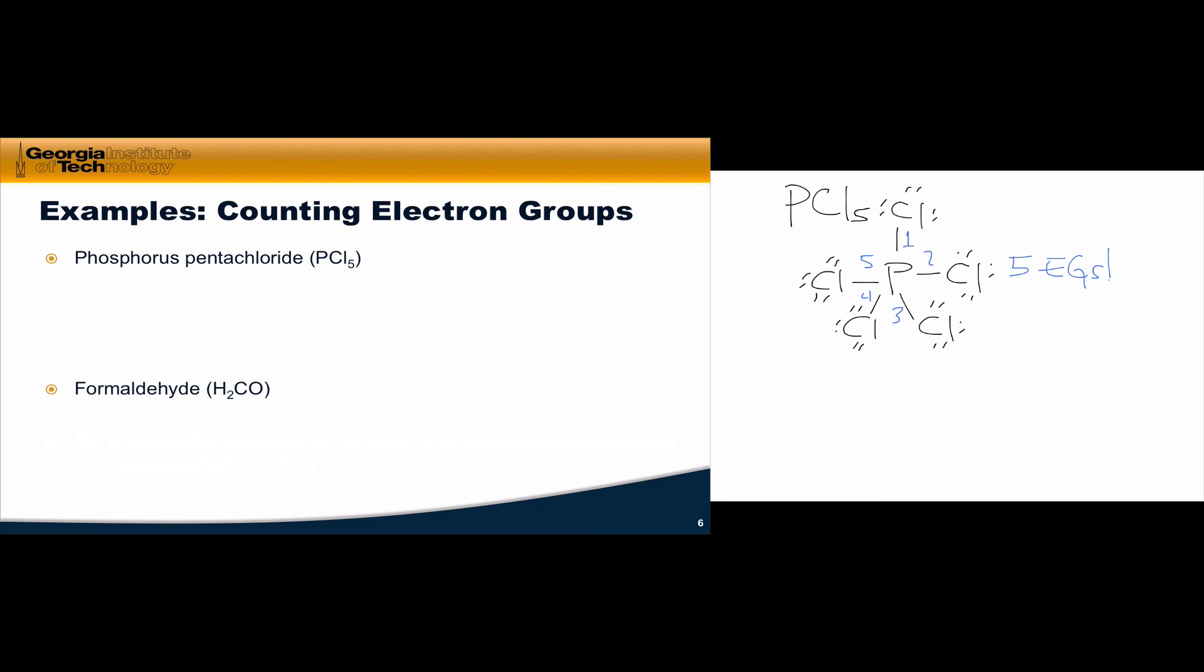Let's look at the second example, formaldehyde. Formaldehyde is H2CO, and the carbon is sitting at the center of this structure, surrounded by the oxygen and two hydrogens. The oxygen forms a double bond to the carbon so that it satisfies the octet rule, and so this is the Lewis structure of formaldehyde.